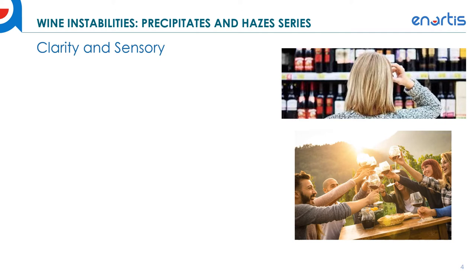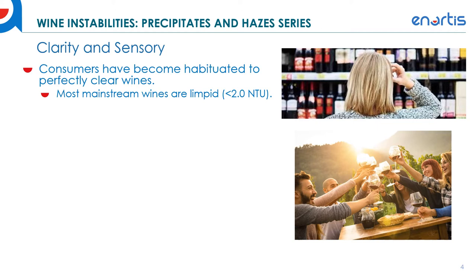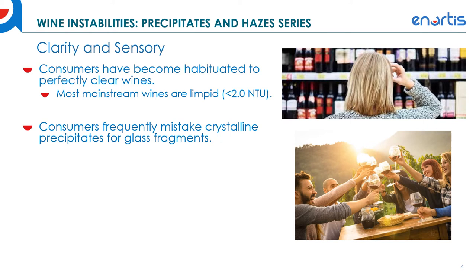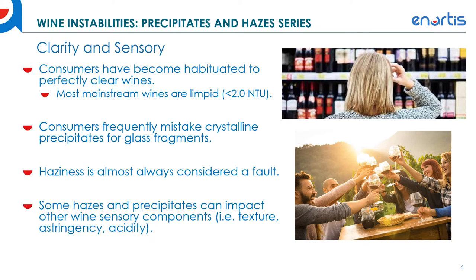With clarity and sensory, we're really talking about the consumer perspective, and consumers have become habituated to perfectly clear wines at this point. Most mainstream wines are limpid, meaning they're less than 2 NTU. Consumers also frequently mistake crystalline precipitates for glass fragments in white wines. Haziness is almost always considered a fault, although there is a growing acceptance for some natural wines. It's also important to consider that some hazes and precipitates can actually impact other wine sensory components, such as texture, astringency, and acidity.